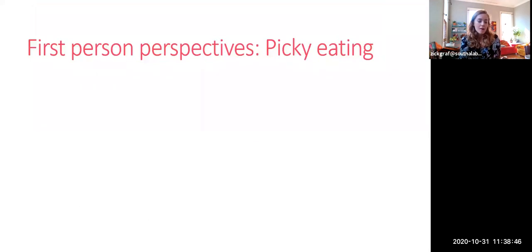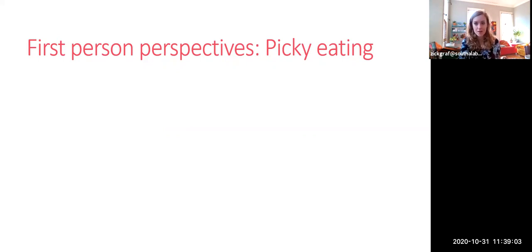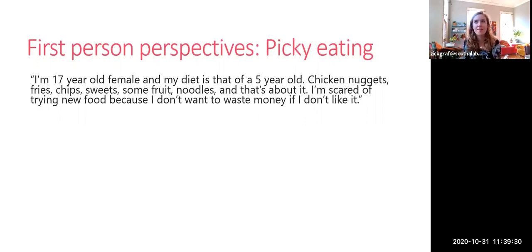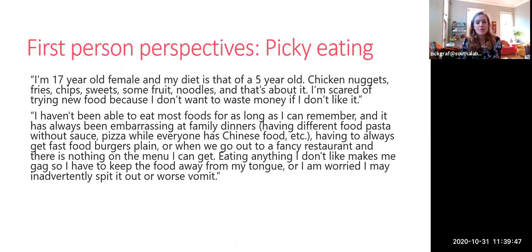Here are some quotes from people with selective neophobic ARFID from the ARFID subreddit. One person posted: 'I'm a 17-year-old female and my diet is out of a five-year-old — chicken nuggets, fries, sweets, chips, some fruit, noodles, and that's about it. I'm scared of trying new food because I don't want to waste money if I don't like it.' This concept that picky eaters eat like children is really stigmatizing and demoralizing, but picky eating does have an onset before age five and many safe foods were often introduced very early in life.